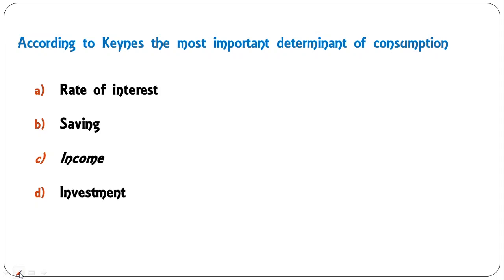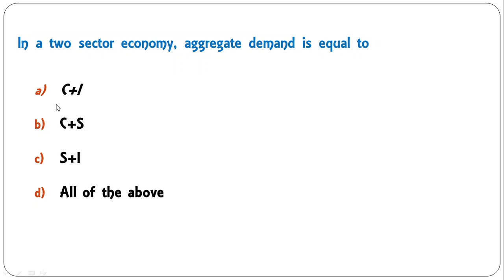Next question: according to Keynes, the most important determinant of consumption is rate of interest, saving, income, or investment? Income largely determines consumption under Keynesian analysis — income influences both consumption and saving. So C is the correct answer.